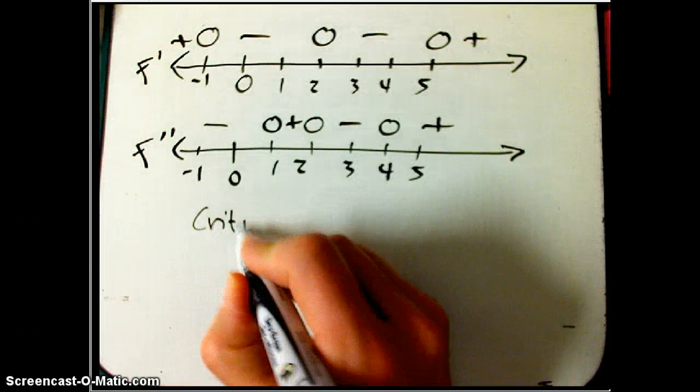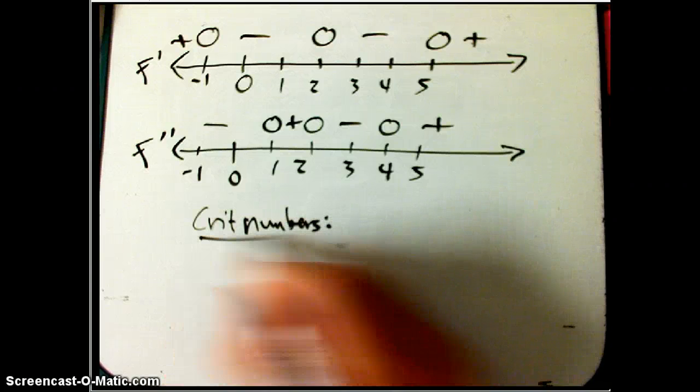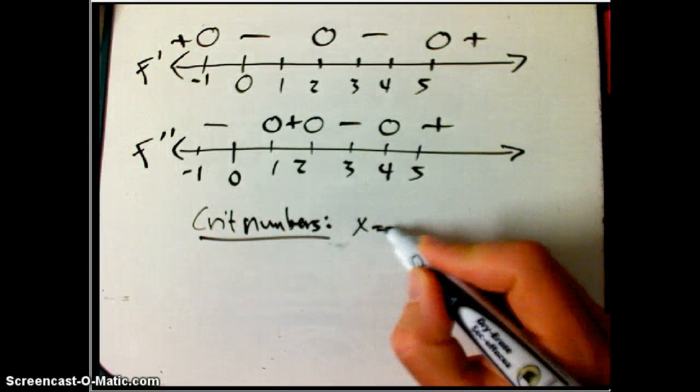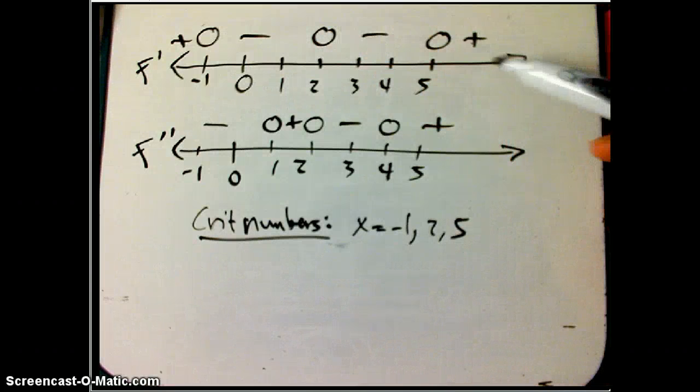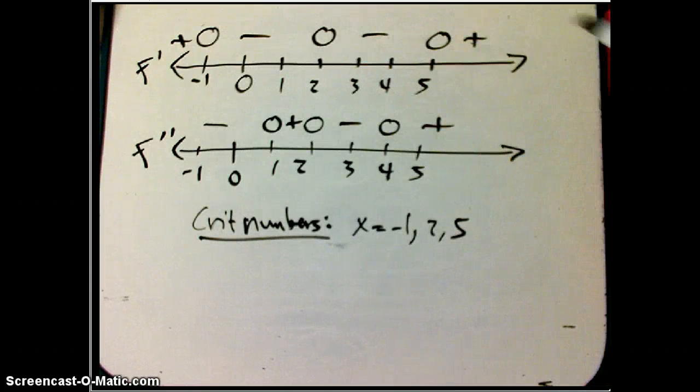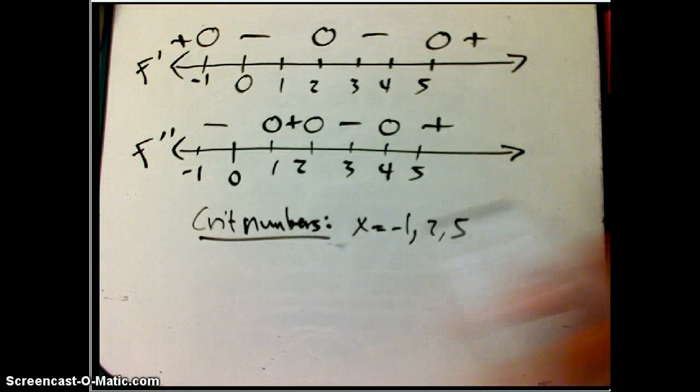So the critical points, or critical numbers, that's Stewart's terminology. Those are just x equals minus one, two, and five. I didn't choose to put in any DNEs. Those could certainly come into this story, but I didn't put any in here. Just zeros or DNEs of the first derivative.